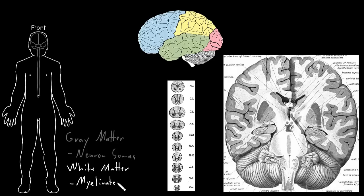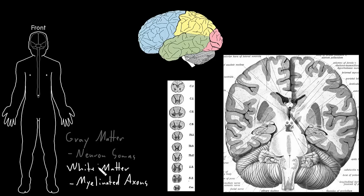Myelinated — so axons that are wrapped in myelin, myelinated axons. And these are actually kind of funny names for these parts of the central nervous system because they're really not gray or white. They're all kind of different tan colors in life. But when the tissue is prepared certain ways after being removed from the body, it can have a grayish appearance or a more whitish appearance. And so these are the names that have stuck for these general areas, the gray matter and the white matter.